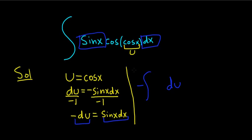What's left over? Just this cosine of cosine of x. But the inner cosine is u. So this is cosine of u. Beautiful stuff.